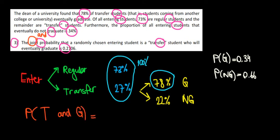Because we have conditional probability, we must take that condition into account. So the joint probability when we have dependent probability is the probability of being a transfer student times the probability of graduating given that we're a transfer student.